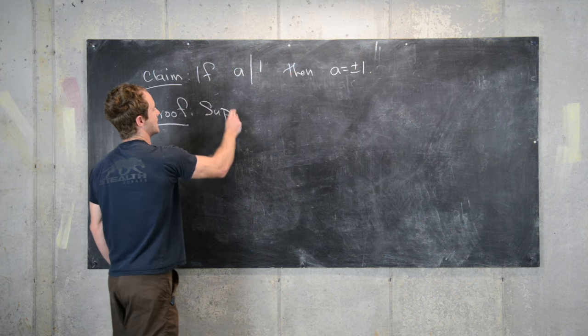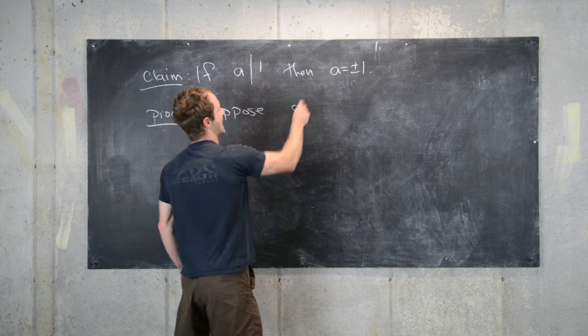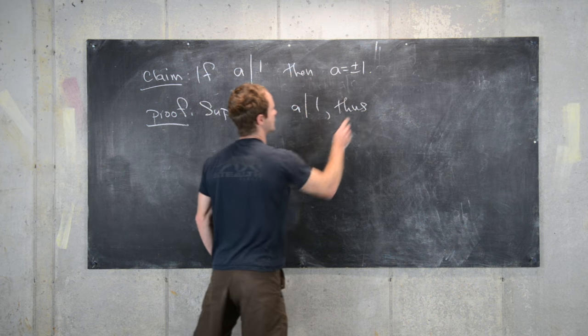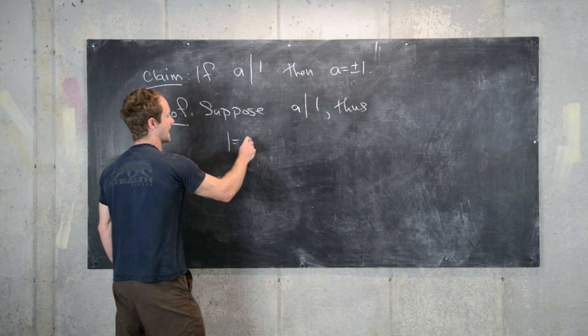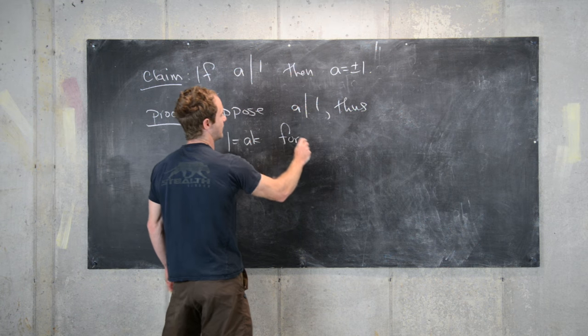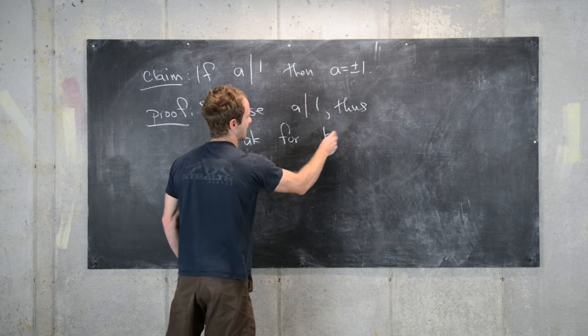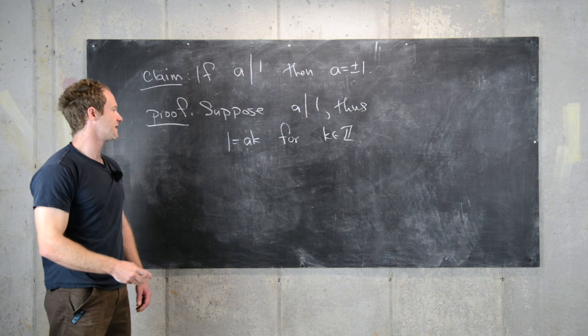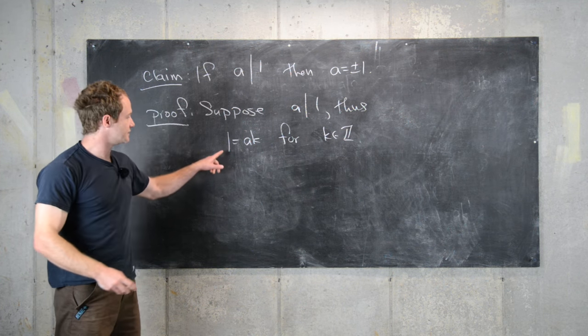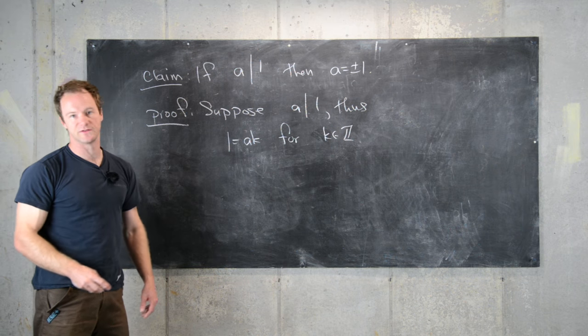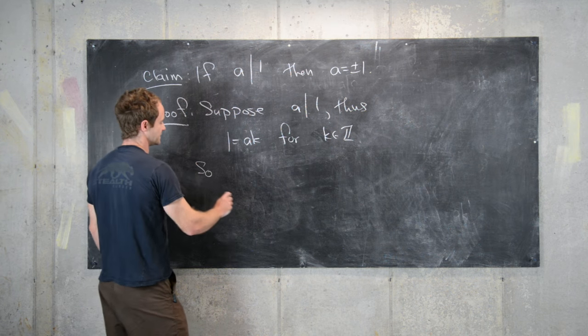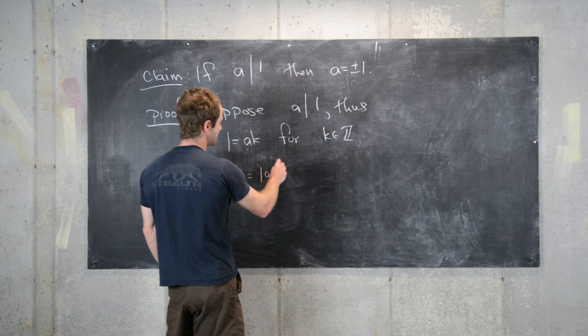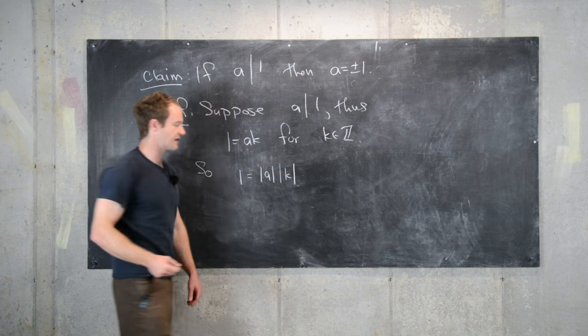Let's suppose that a divides 1. Thus we can write 1 equals a times K for some integer K. And then what I want to do now is take the absolute value of this equation, so that'll give us 1 equals the absolute value of a times the absolute value of K.